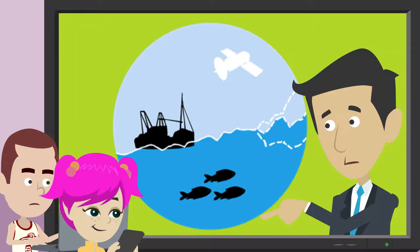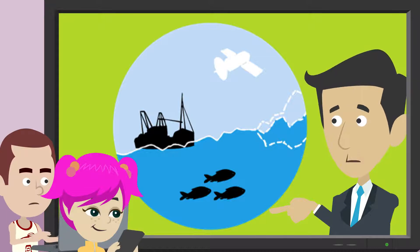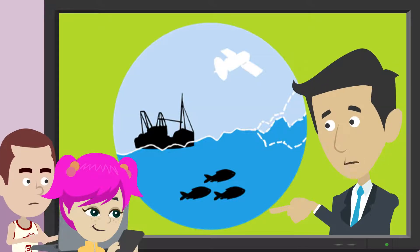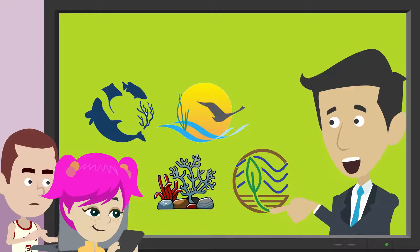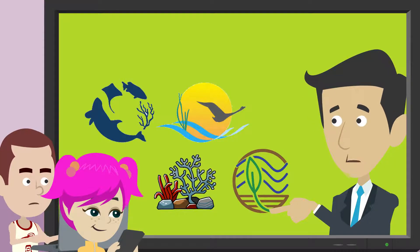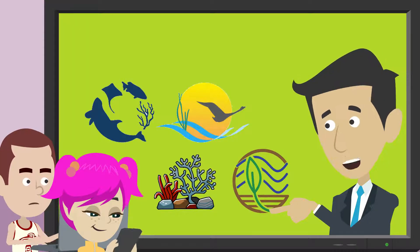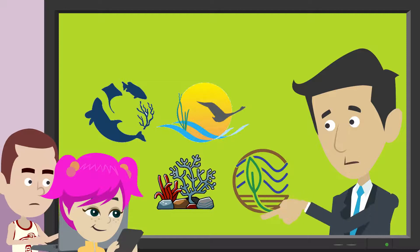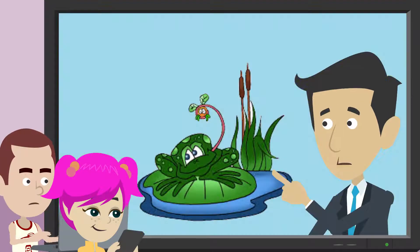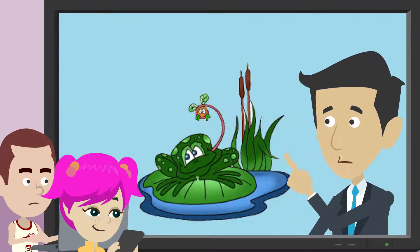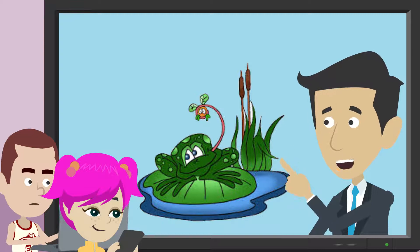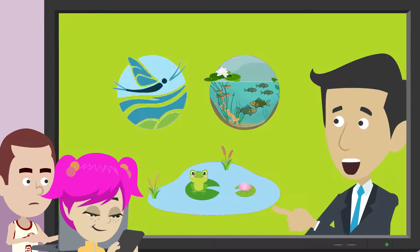The largest aquatic ecosystem is the marine ecosystem, which covers more than 70% of the Earth's surface. Oceans, estuaries, coral reefs and coastal ecosystems are various marine ecosystems. Freshwater ecosystems cover less than 1% of the Earth, and are subdivided into lotic, lentic, and wetlands.